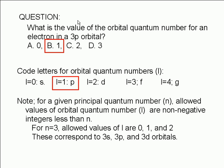For example, for N equals 3, the allowed values of L are 0, 1, and 2. These correspond to 3S, 3P, and 3D.